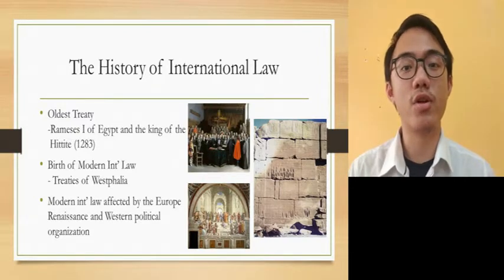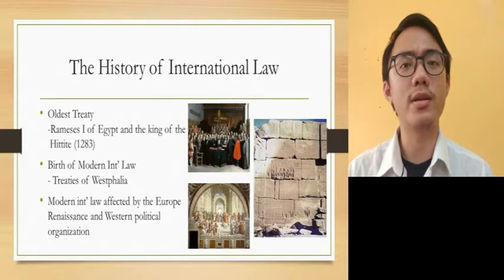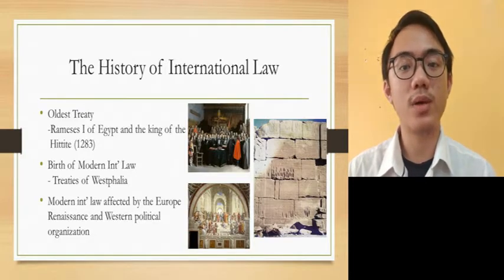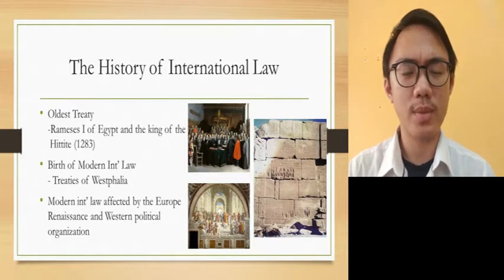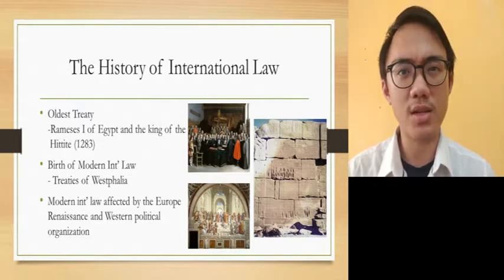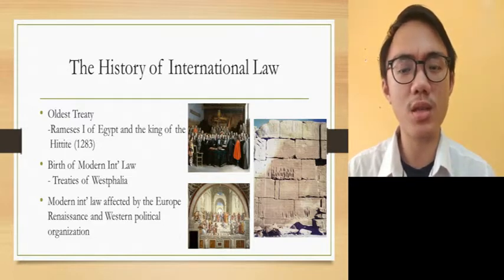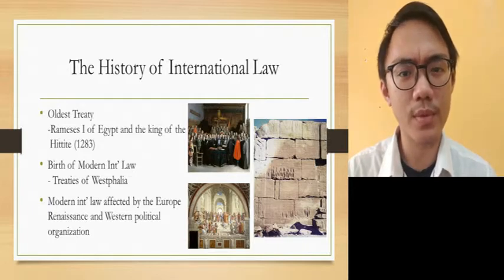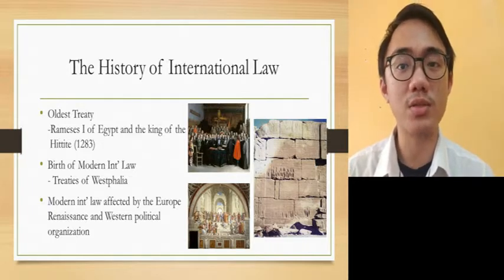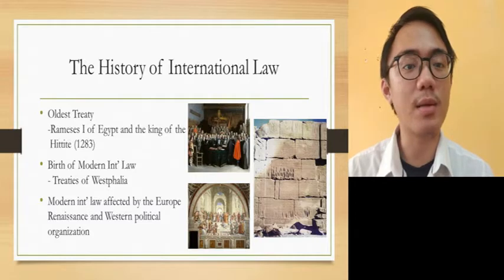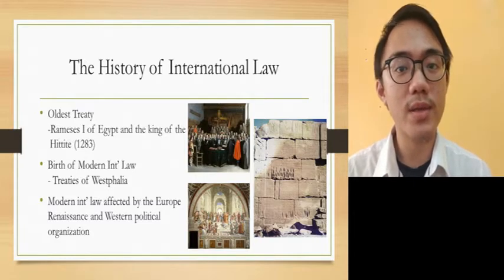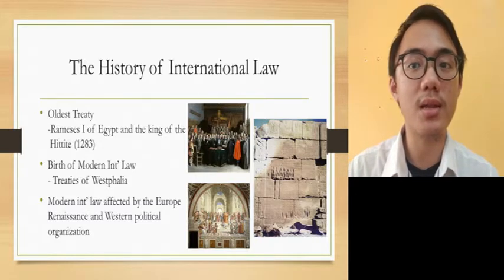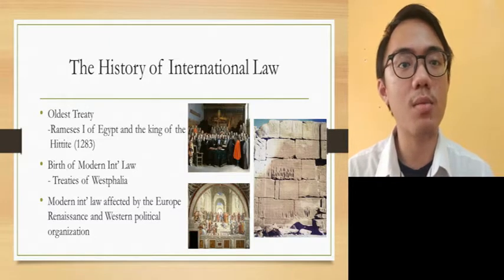Modern International Law evolved out of Renaissance Europe, intertwined with the creation of Western political organizations. The birth of modern international law was around 1648 when the Treaty of Westphalia was formed. The Peace of Westphalia was a series of peace treaties signed between May and October 1648 in the Westphalian cities of Osnabrück and Münster, that ended the Thirty Years' War in Europe.